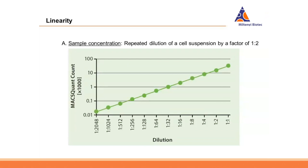Linearity essentially means that if you expect twice the number of cells in a sample, you actually want to get twice the count, and conversely, if you expect half the cells you expect half the count. A straightforward way to test this is a dilution series, starting with a certain cell concentration and diluting by a factor of two in subsequent steps. When plotted on a log diagram, one would expect a perfectly straight line. From 1-to-1 down to a dilution of 1-in-2048, this line is very close to perfection.